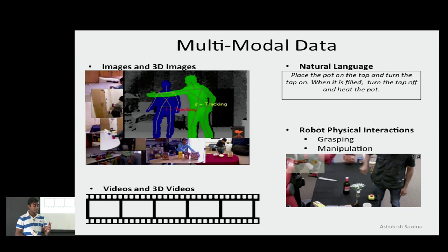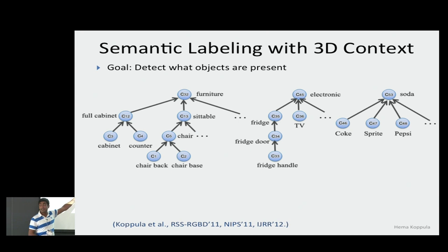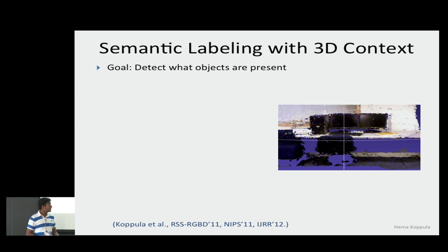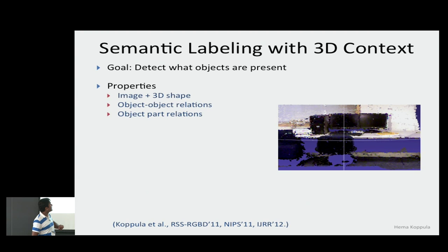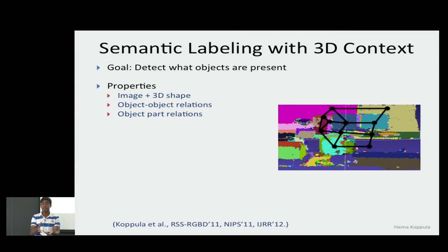To give a brief overview of one piece of work: we built software that takes a 3D point cloud. You can use a Kinect sensor — the robot goes around and builds a 3D point cloud — and it labels each part of the scene. For example, it can identify that an object is a fridge, so if the robot wants to open the fridge to get something out, it can identify and perform that manipulation action. Our software segments the point cloud and uses a conditional random field that looks at image features, 3D shape, and object parts to figure out what each object is.